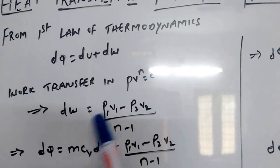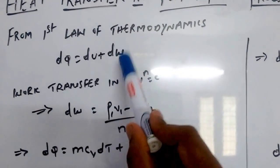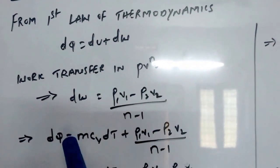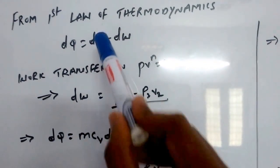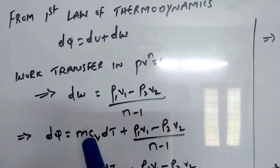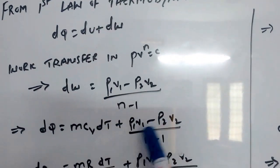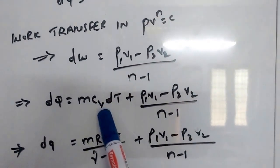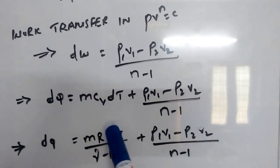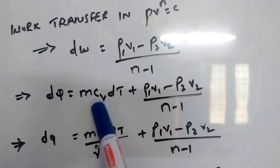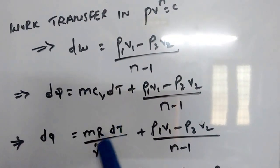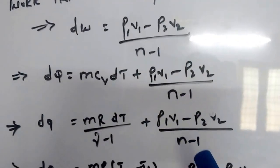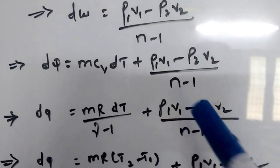Substituting dW into the first law equation, dQ equals the change in internal energy, which is M·Cv·dT, plus P1V1 minus P2V2 divided by n minus 1. Cv can be written as R divided by gamma minus 1. Therefore we have M·R divided by gamma minus 1 into dT, plus P1V1 minus P2V2 divided by n minus 1.